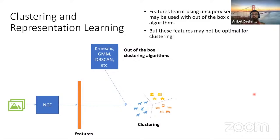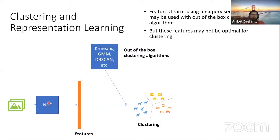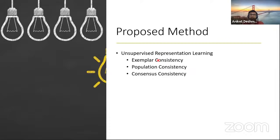In this work, we are going to do clustering and representation learning in an end-to-end way. We will divide unsupervised representation learning methods like NCE, MoCo, and SimCLR into three categories based on the constraints they use: exemplar consistency, population consistency, and consensus consistency. I will go into details of these three constraints and then describe the proposed method.